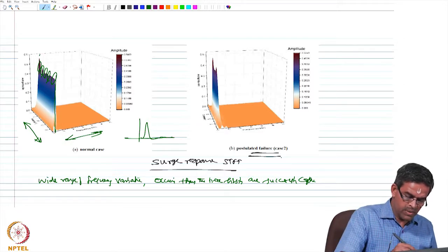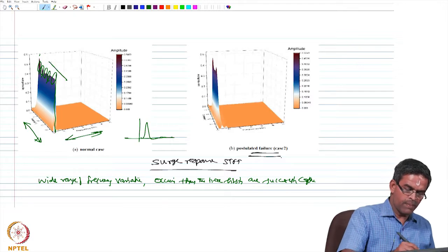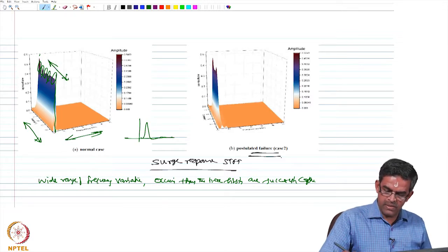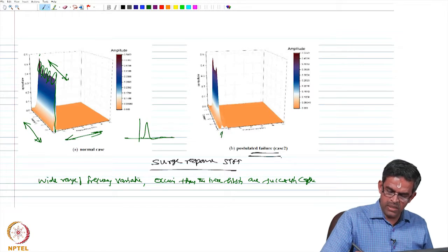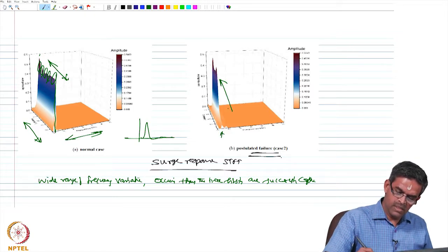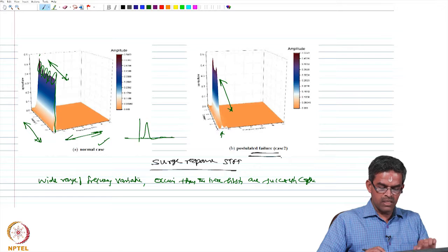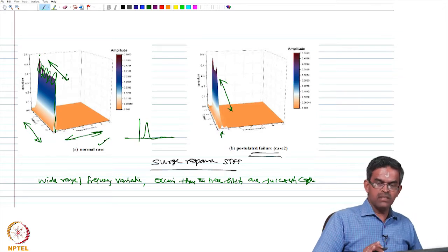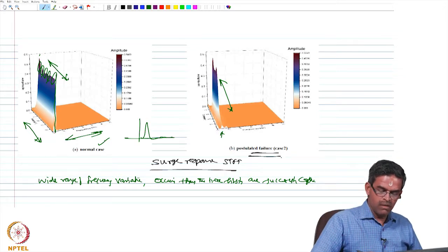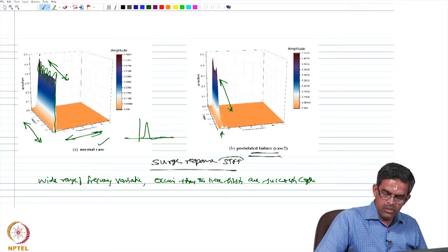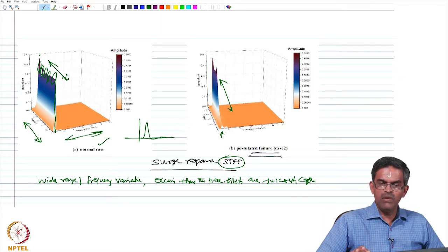At the same frequency lot of variations are happening along the time, that is true in both cases. Even in postulated failure case as well as in the normal case you can see this variation. This variation is effectively captured when you do the short term Fourier transform which is required for the data analysis to find out the time localization of the damage.